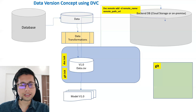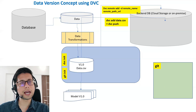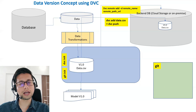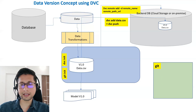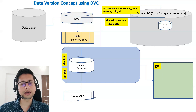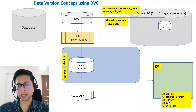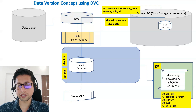Suppose we already have a data.csv which is version one of our data. We run dvc add data.csv and then dvc push — this pushes data.csv version one to your integrated backend database. The moment you run dvc add data.csv it generates a pointer file called data.csv.dvc. All those pointer files are stored in git, so you run git add -A, then git commit, then tag and push — these commands store all metadata and pointer files in git.